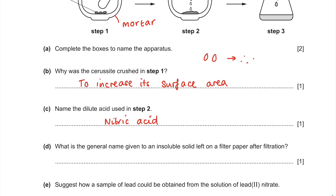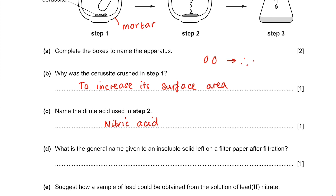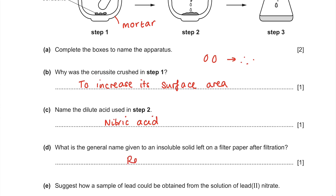What is the general name given to an insoluble solid left on a filter paper after filtration? It's the residue — that is the stuff left behind. You can use 'residue' in everyday English as well.